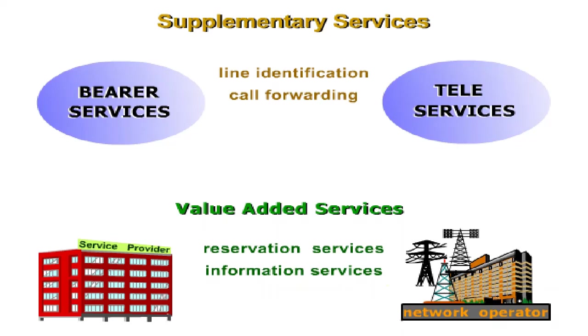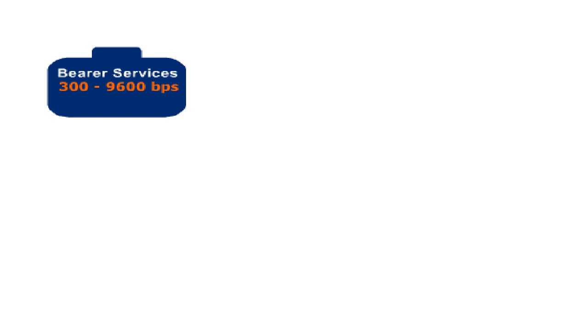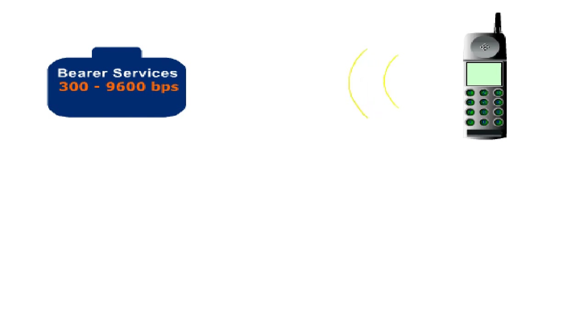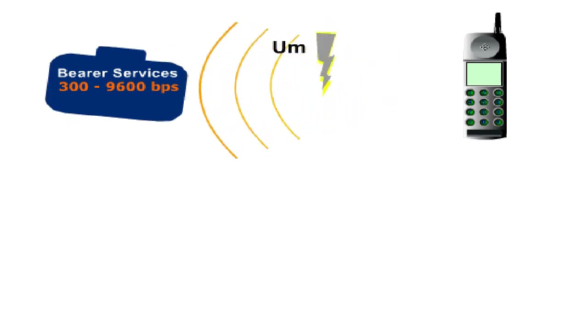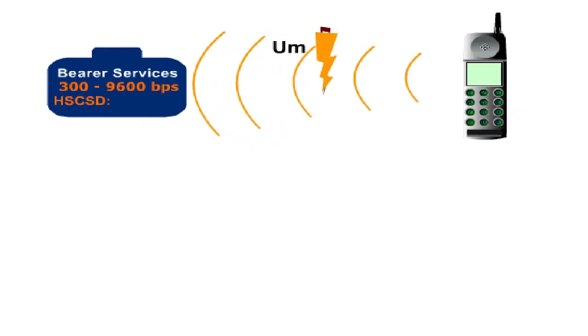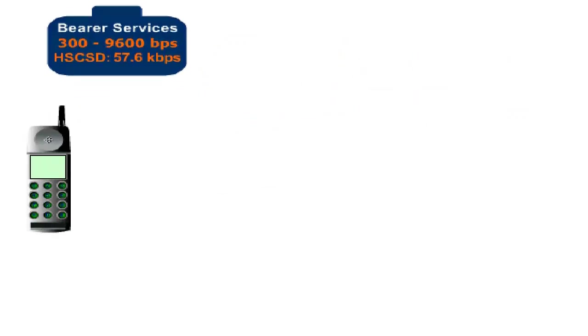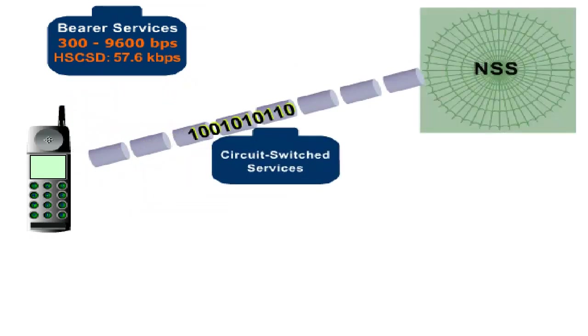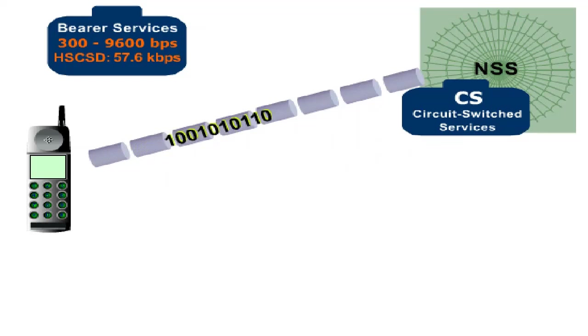GSM specifies a huge variety of bearer services for data transmission. Bit rates between 300 and 9600 bits per second can be chosen according to data terminal equipment and the interference situation of the air interface. With HSCSD, the data rate may increase to 57.6 kilobits per second. All bearer services are handled as circuit switched services between the mobile data equipment and the NSS, requiring a permanent link between the involved components.